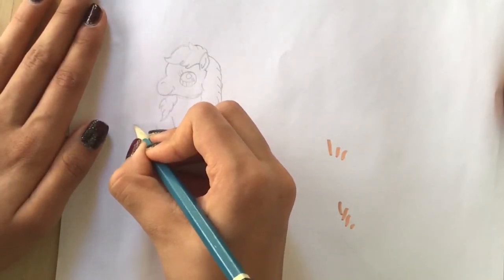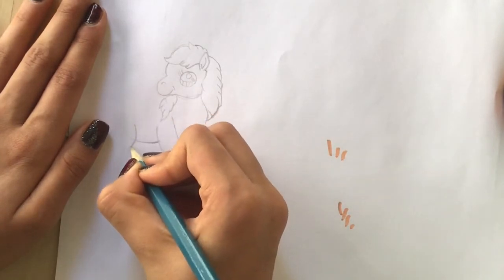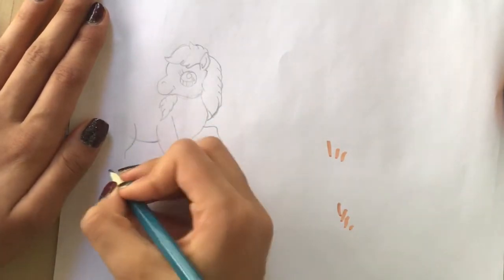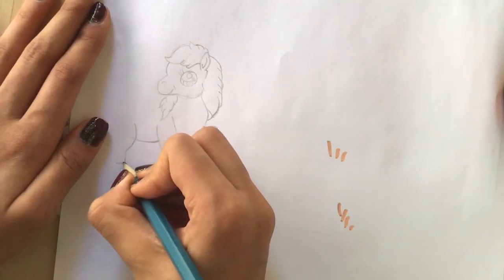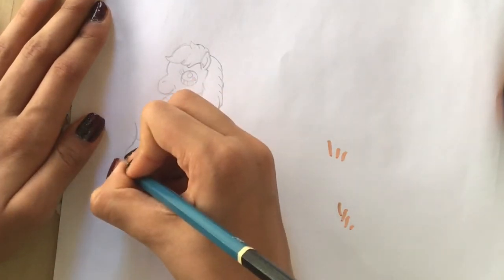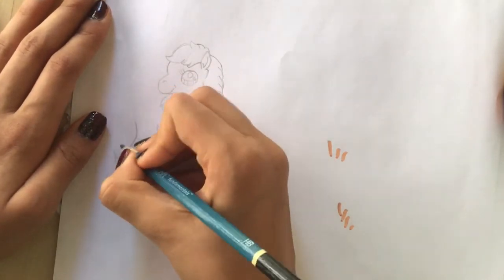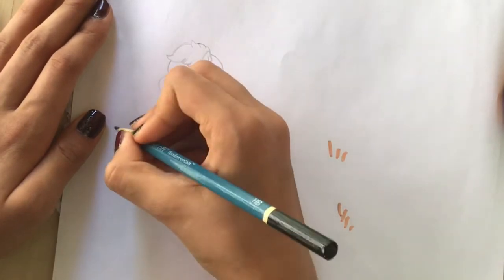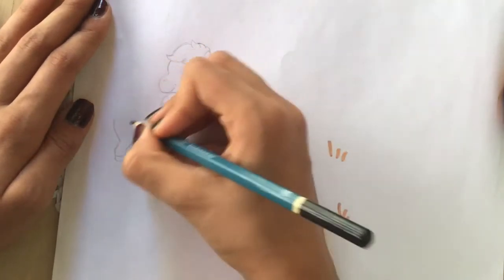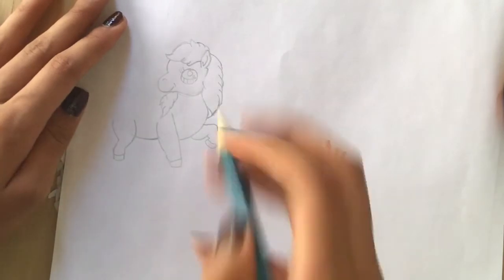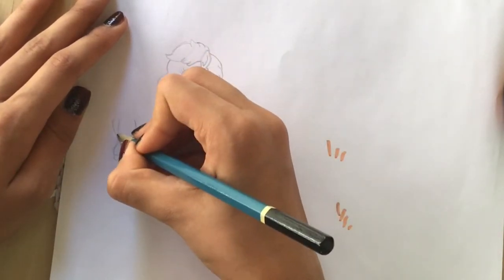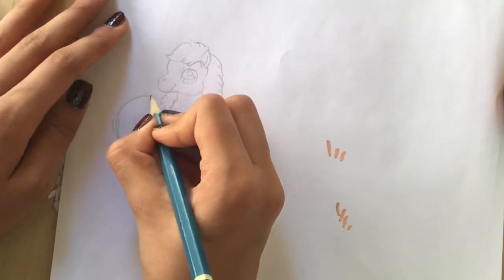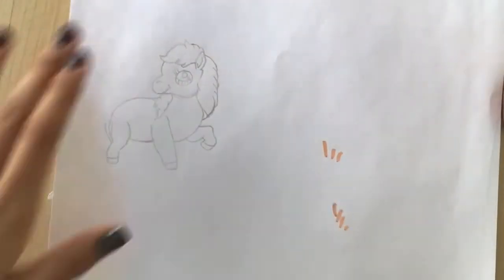And then draw the back leg. Slanted. Draw another line down, and then the hoof. And then a kind of slanted line, and use that line to draw the rest of the horse's body. Maybe this is a bit too fat near the leg, so fix it.